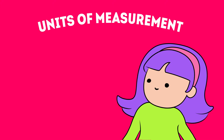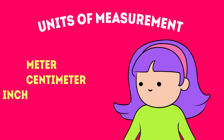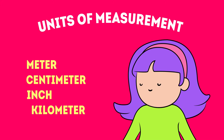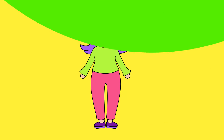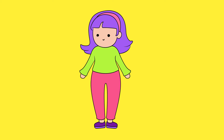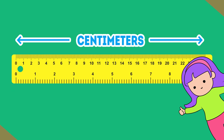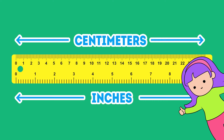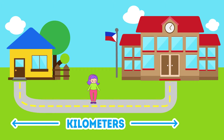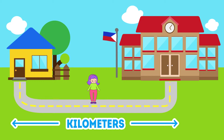The units of measurement we can use are either meter, centimeter, inch, or kilometer. One meter is roughly the span of both your arms outstretched. Centimeters and inches are small — they're the lines you see on rulers. Kilometers, on the other hand, are used for covering long distances, like how far your house is from your school.